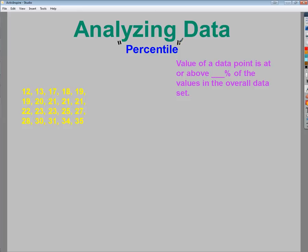Those tests tend to report things like your percentile, so maybe you're in the 75th percentile for your composite score on the ACT. What that means is the value of your score is at or above 75% of the values that other students have scored, including yourself. So 75% of the scores earned by students on that test were as good or worse than yours.